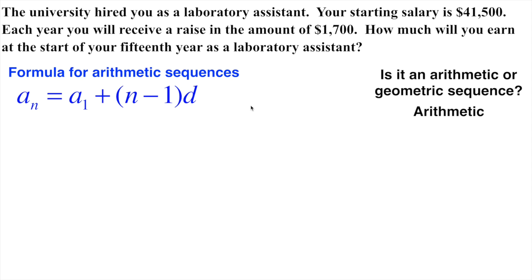Now that we know that, we can bring in our formula for arithmetic sequences. This is just a generic formula for arithmetic sequences. We start plugging in information that we know. We know what the starting amount, a₁, this is our first year, we're going to make $41,500. We also know what the difference amount is going to be. It's a common difference, $1,700. We're going to make $1,700 more every single year that we work there.